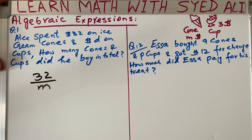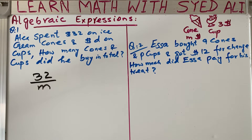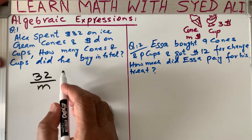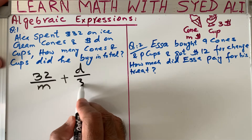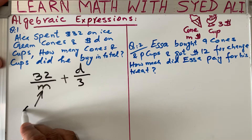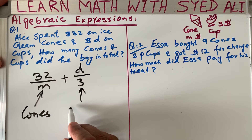Alex also spent d dollars on cups. Suppose he spent nine dollars on cups and the cost of each cup is three dollars — nine divided by three means he can buy three cups. Since d is not known, we write d divided by 3 as the number of cups. So 32/m is the number of cones and d/3 is the number of cups.